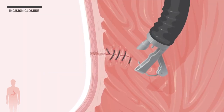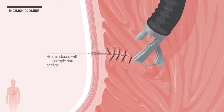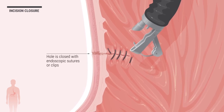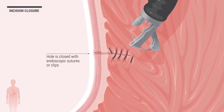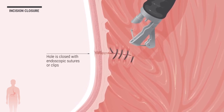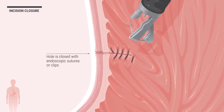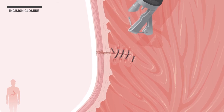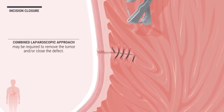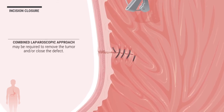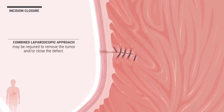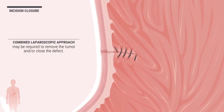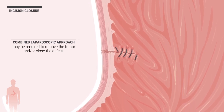At the end of the procedure, the hole made by the incision is closed with endoscopic sutures or clips. On some occasions, a combined laparoscopic approach may be required to remove the tumor and or close the defect.